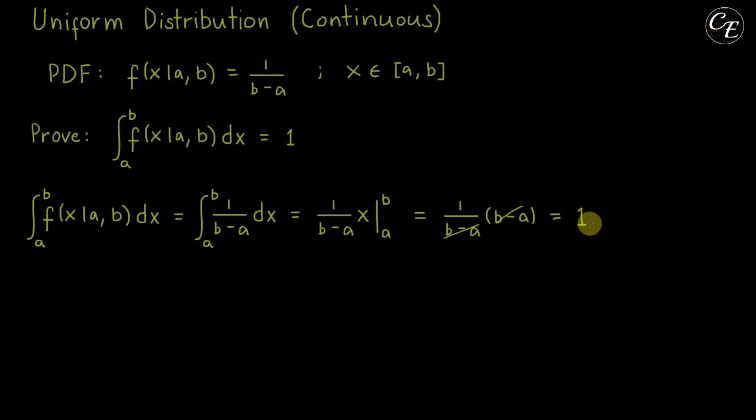So now we have the constant one, which is what we need for our proof. So now this ends our proof that the integral of the probability density function of a continuous uniform distribution with limits where its domain is defined is equal to 1.